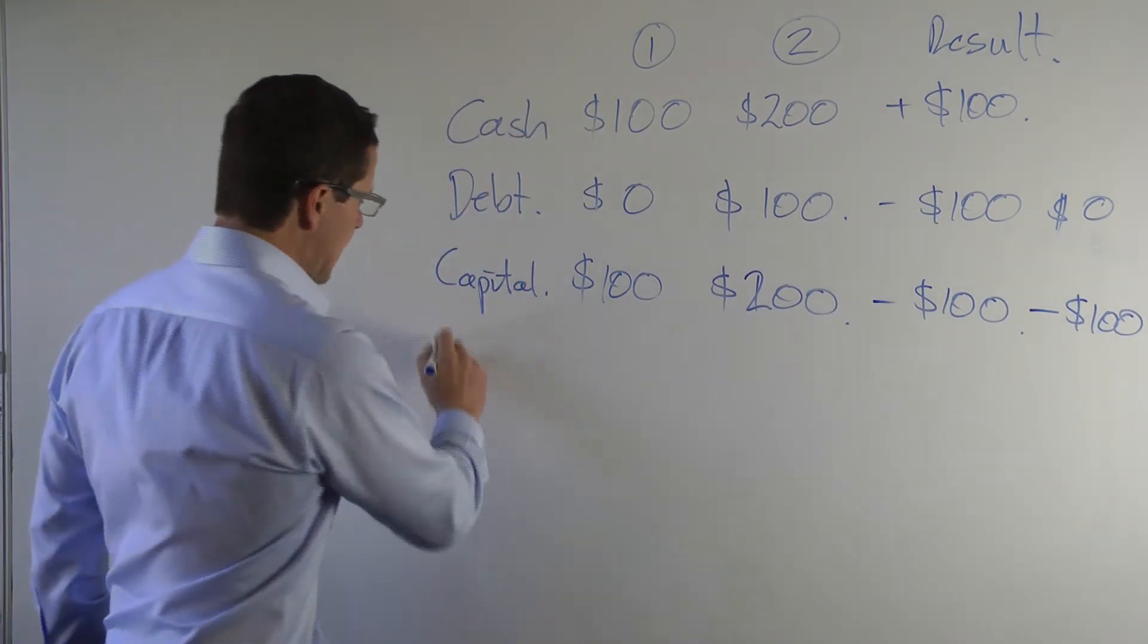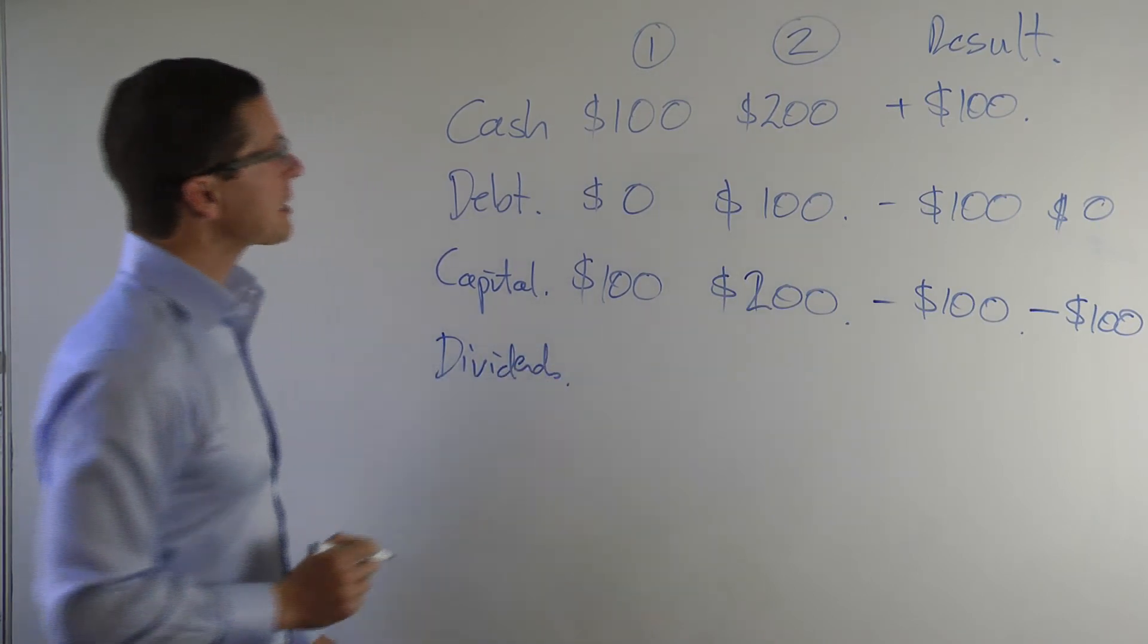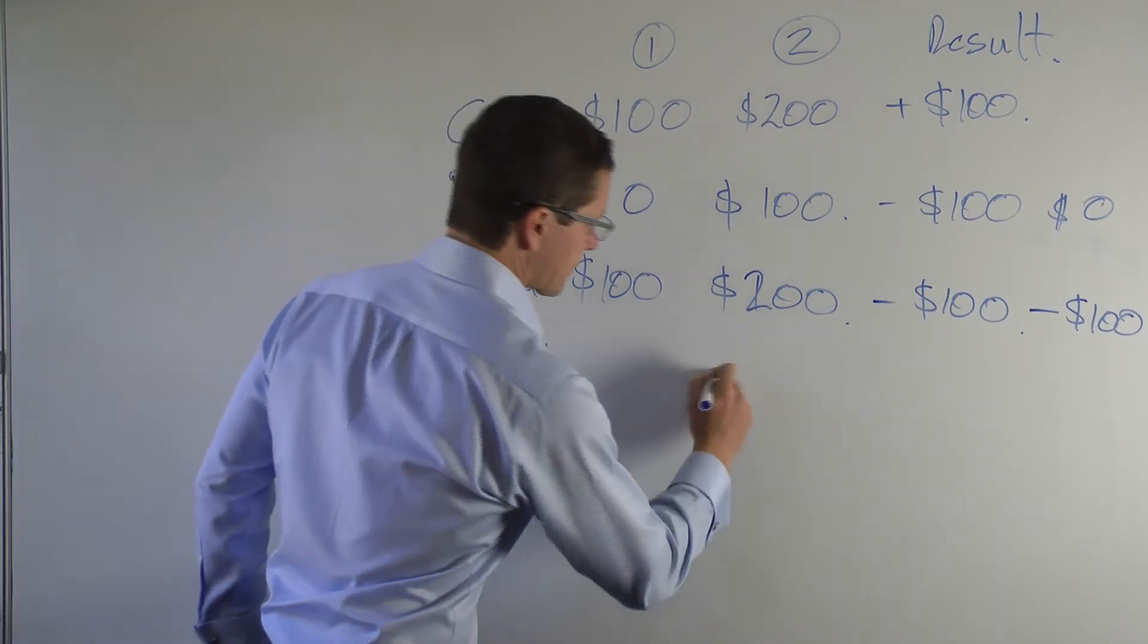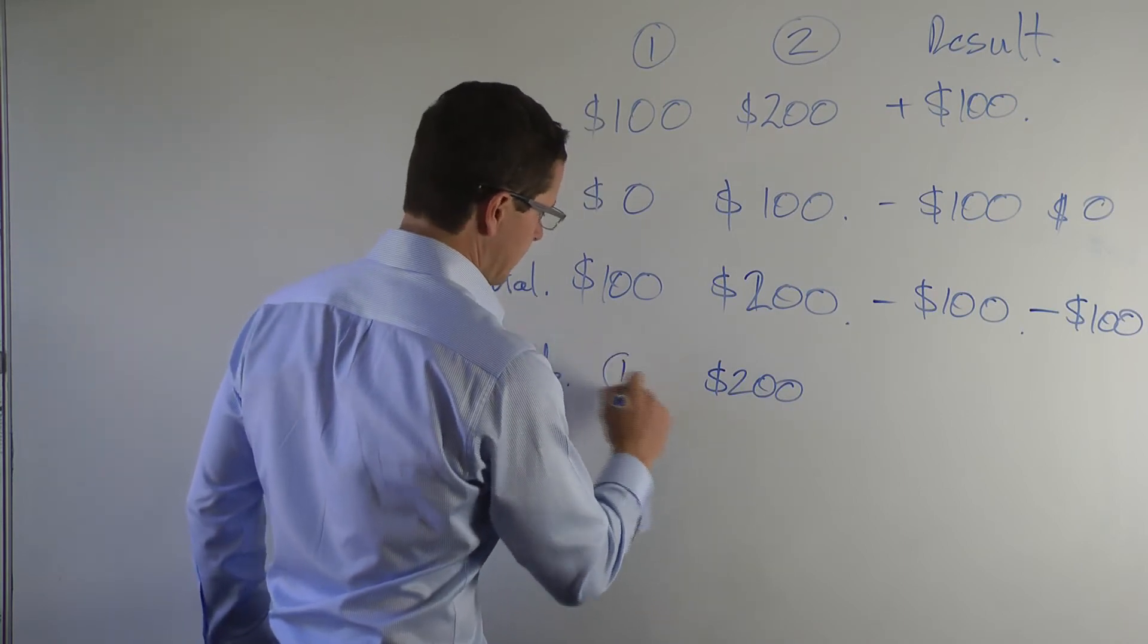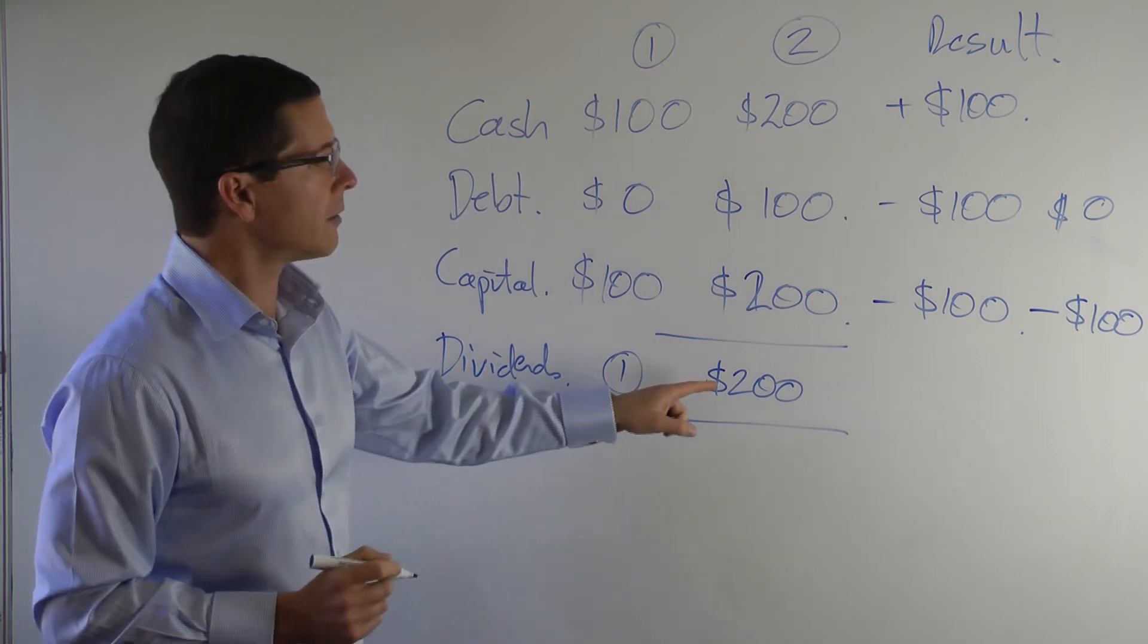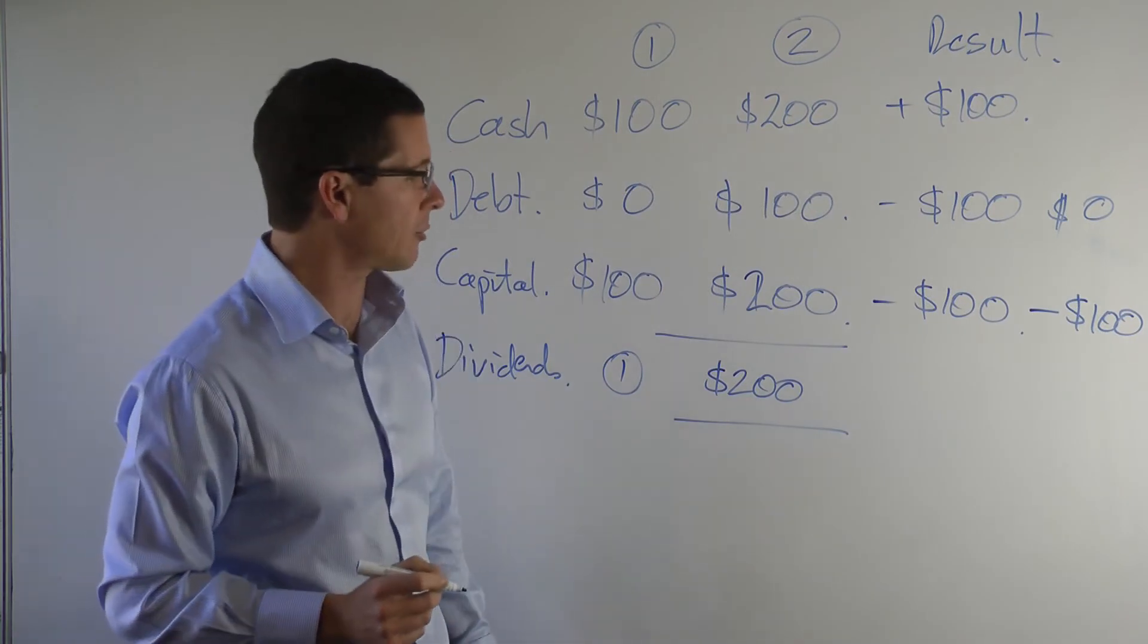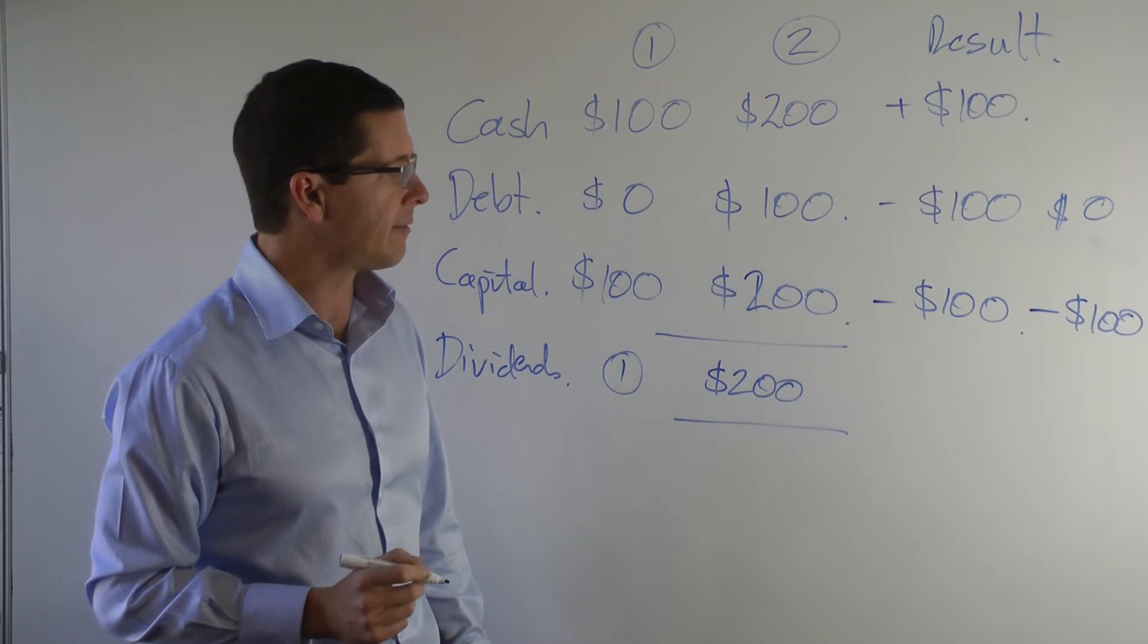And finally, we'll take a look at dividends as well. If we've discovered that the company paid out $200 as dividends, and that's from year one, then what we know is that the company didn't actually lose $100 at all. The reason why the cash balance is only up $100 is because $200 has been paid out as a dividend.